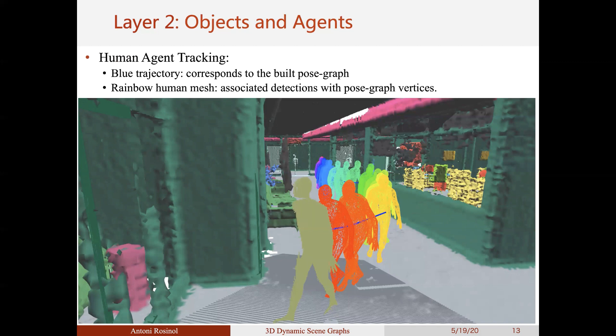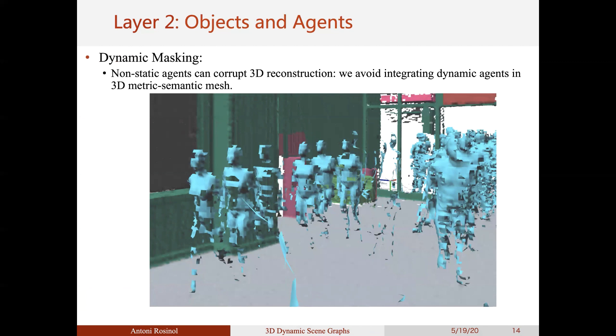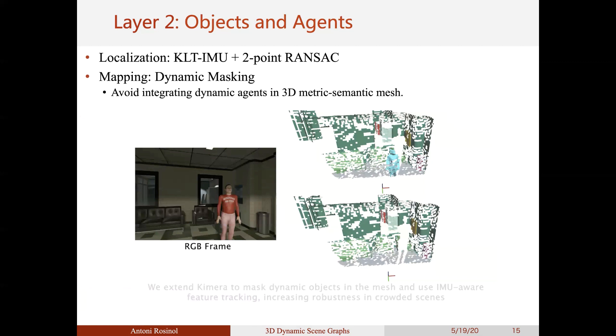Here we show the results of the human agent tracking module, with in blue the pose graph edges and in a rainbow color according to timestamps the detected humans. Clearly, building a 3D mesh with dynamic elements may introduce artifacts that we must deal with. In our case, dynamic objects both affect the localization and the mapping modules. Therefore, we use an inertial-aided Lucas-Kanade tracker, which discards feature tracks that do not follow the expected per-frame rotational optical flow inferred from the gyroscope, and a two-point RANSAC that also uses the IMU rotation to prune outlier correspondences in the feature tracks.